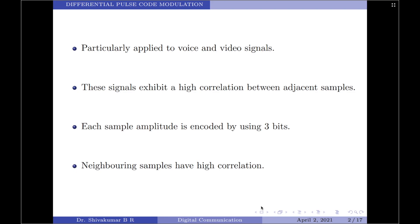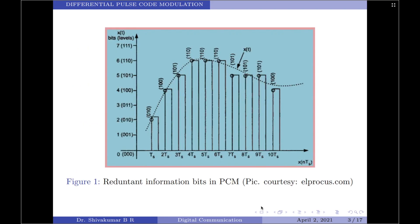As an example, let us consider the encoded PCM wave as shown in figure 1. We note that each sample amplitude is encoded by using 3 bits. For example, this sample amplitude is encoded as 010, the next one is encoded as 100, the next one is 101 and so on. Please note these 3 samples have the exact same codeword, so are the next 3 samples as in the diagram. Further, we find that the neighboring sample amplitudes differ only by a very small value. In other words, the neighboring samples are said to have high correlation.